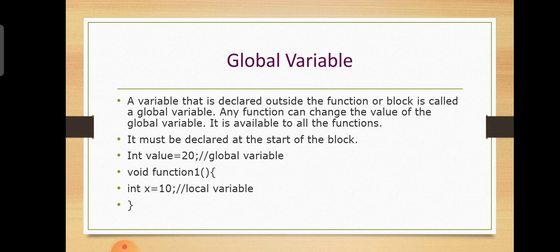Now, the Global variable. A variable that is declared outside the function or block is called a global variable. Any function can change the value of the global variable. It is available to all functions. It must be declared at the start of the block. Here is the example.